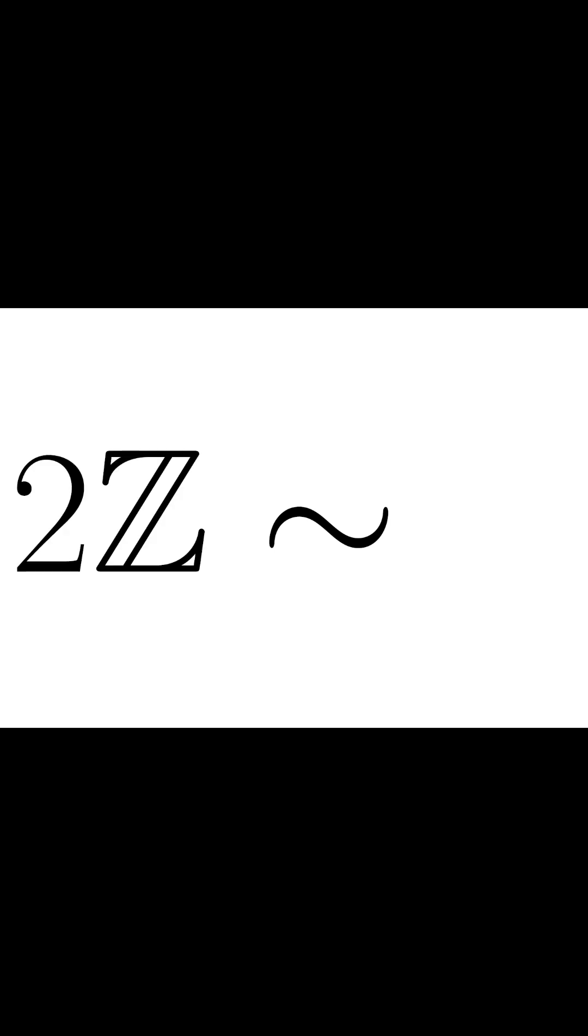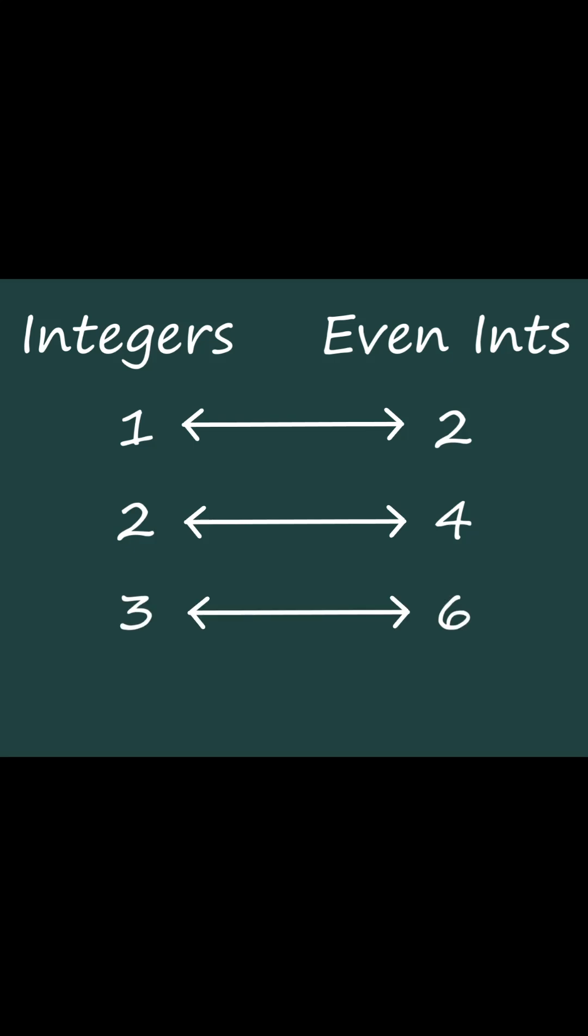There are exactly as many even integers as there are integers. This is because if we pair every integer with its double, we pair up every integer with an even integer in a unique and one-to-one way. And this is only possible because the two sets have the same number of elements.